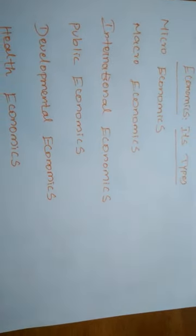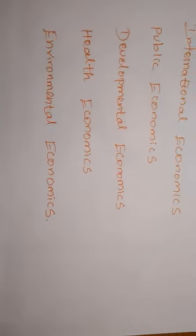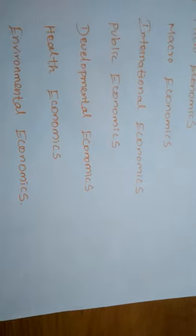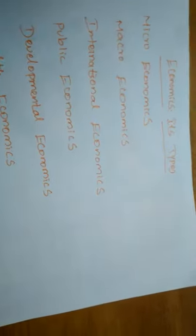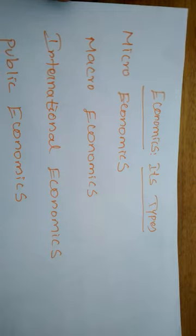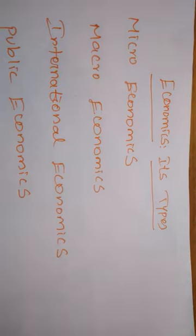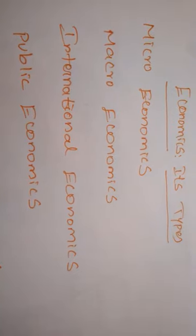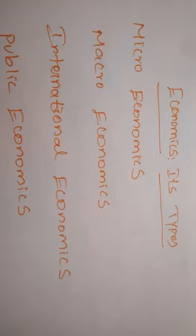We have studied different types of economics: microeconomics, macroeconomics, international economics, public economics, developmental economics, health economics, and environmental economics. Some more types also exist in the subject but will be studied later. We need to know some extra things about the distinction between microeconomics and macroeconomics, since in this lesson we will study more about micro and macro only.